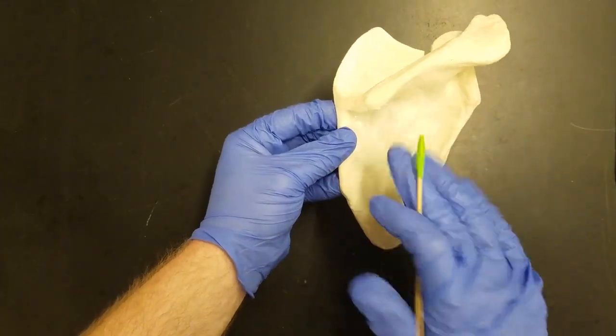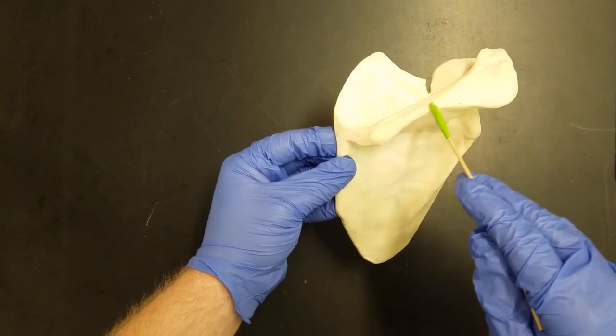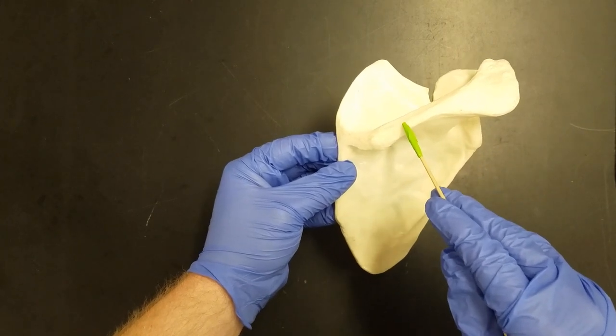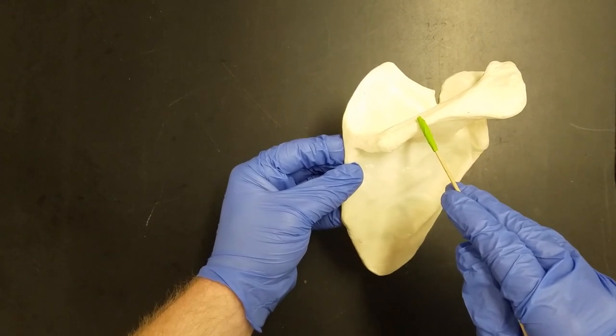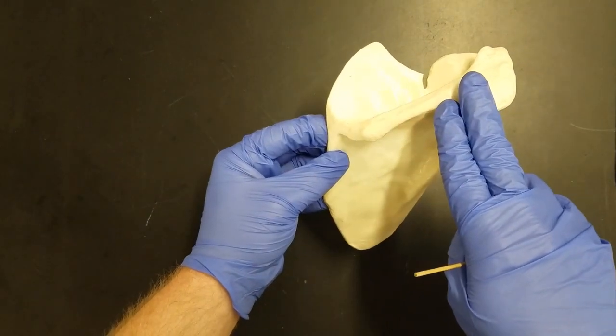We know that this is the posterior side because we see this very long ridge of bone running obliquely across the scapula. This is called the spine of the scapula. The spine of the scapula is an important landmark, and you can actually feel it on your own back.